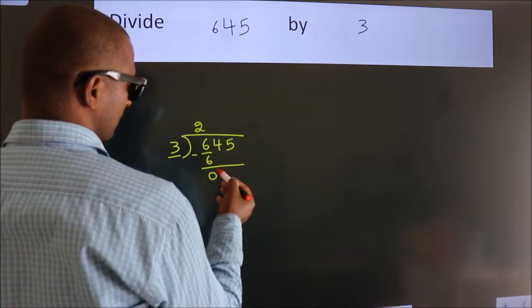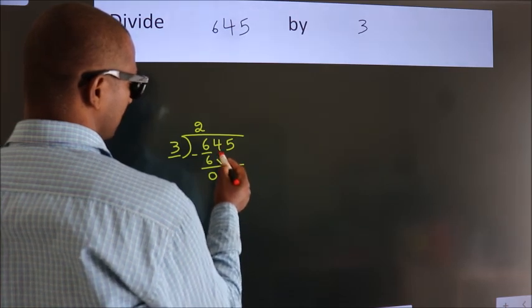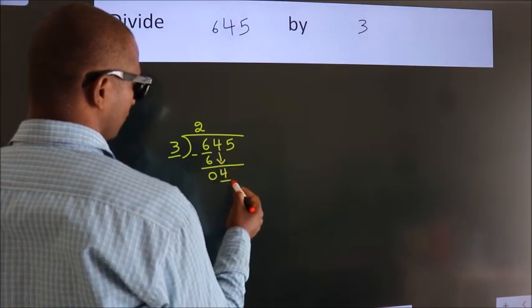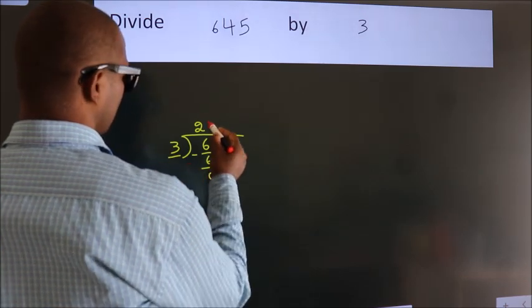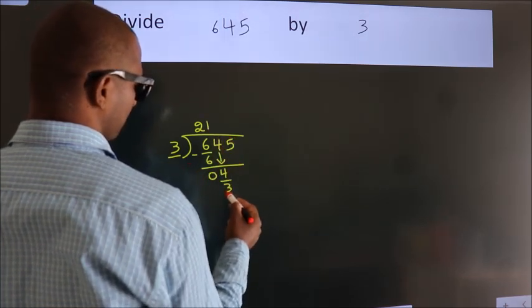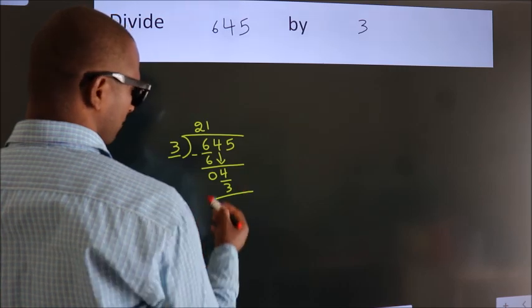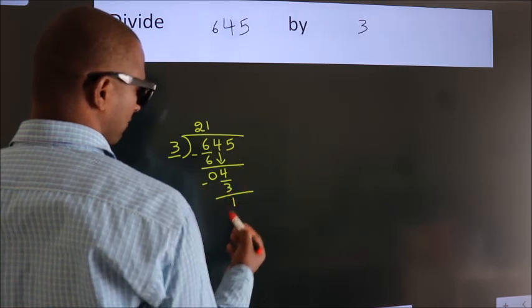After this, bring down the beside number, so 4 down, so 4. A number close to 4 in 3 table is 3 1s, 3. Now, we subtract, we get 1.